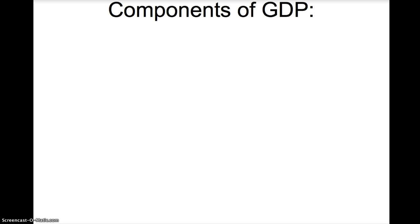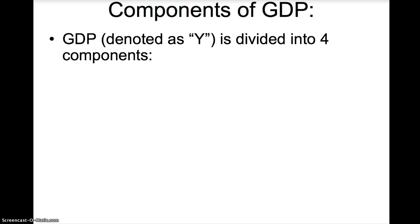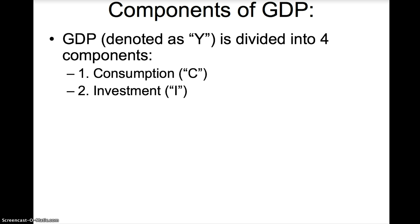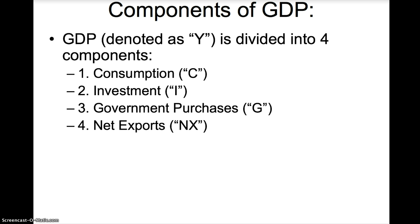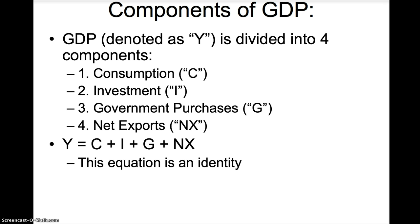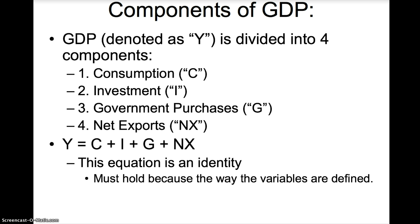GDP can be divided into four components. We use the variable Y for GDP, since it is easier to work with a single letter variable. GDP is divided into consumption, investment, government purchases, and net exports. This equation is an identity, meaning it must hold true the way the variables are defined.